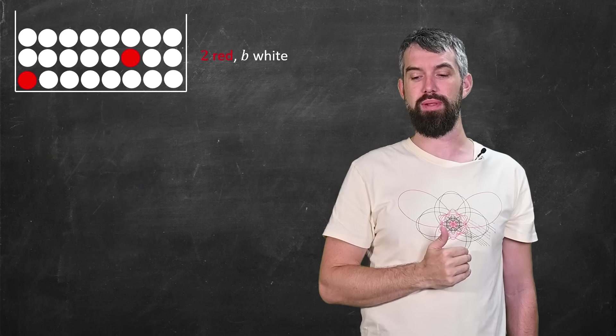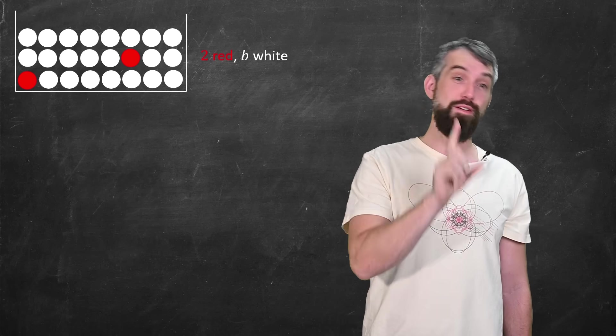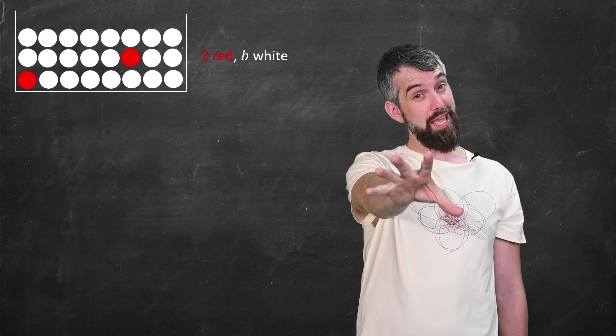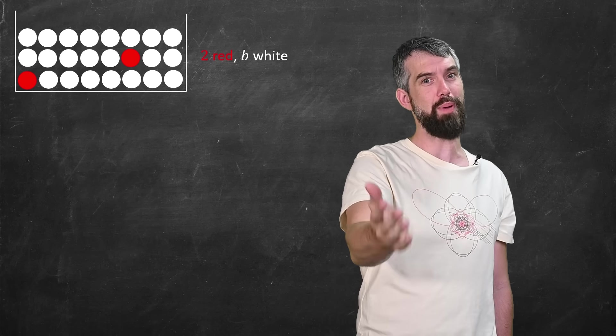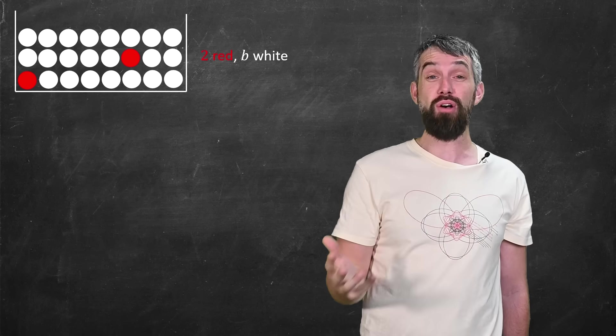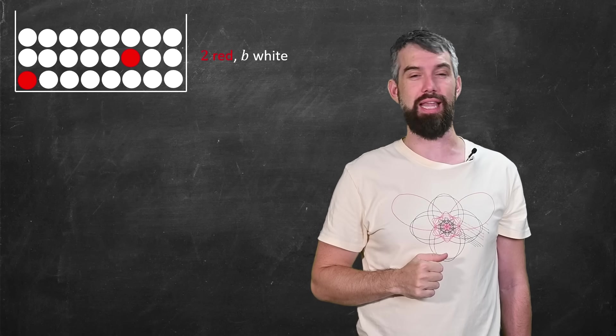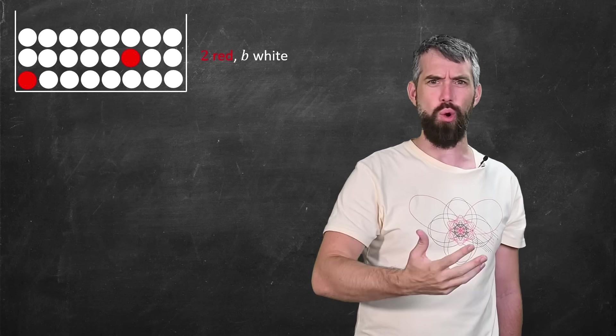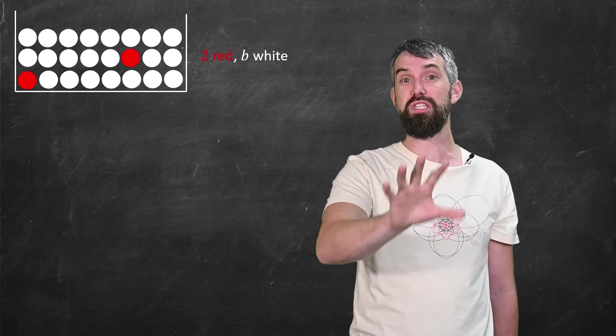What if I tweak the problem a little bit? Instead of having one white and two reds, I'm going to increase to two reds, which sounds better. But I'm going to let the number of whites be any large value that you like, I'll label it b. Maybe a thousand, or a million, or a googol. It doesn't matter, an enormous number of whites.